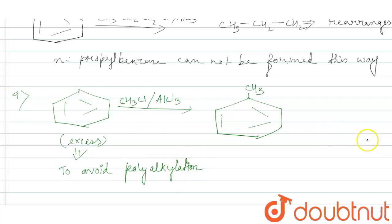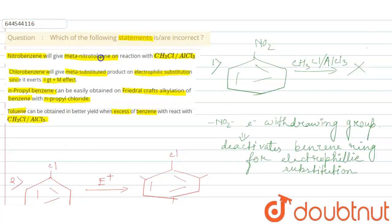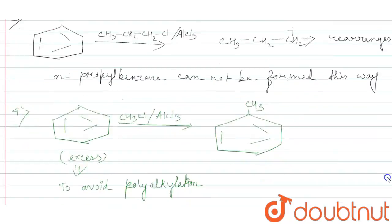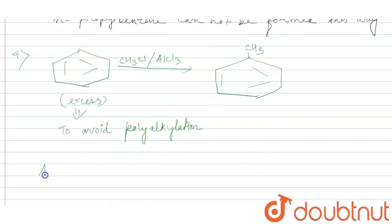So statement four is correct. So our correct answer will be, we were asked which of the following statements are incorrect. So incorrect statements will be A, B, and C. So A, B, and C are our answers.